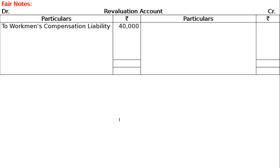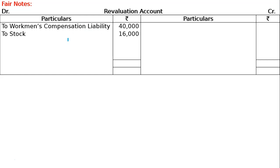Claim on account of workman compensation amounted to 40,000 — this liability of 40,000 will appear in the balance sheet. This is an increase in liability. Next adjustment: Stock is overvalued by 16,000, meaning the stock shown in the balance sheet is 16,000 more. We reduce it to 1,30,000 from 1,46,000 — this is a decrease in asset on the debit side. Total debit side of revaluation = 56,000.